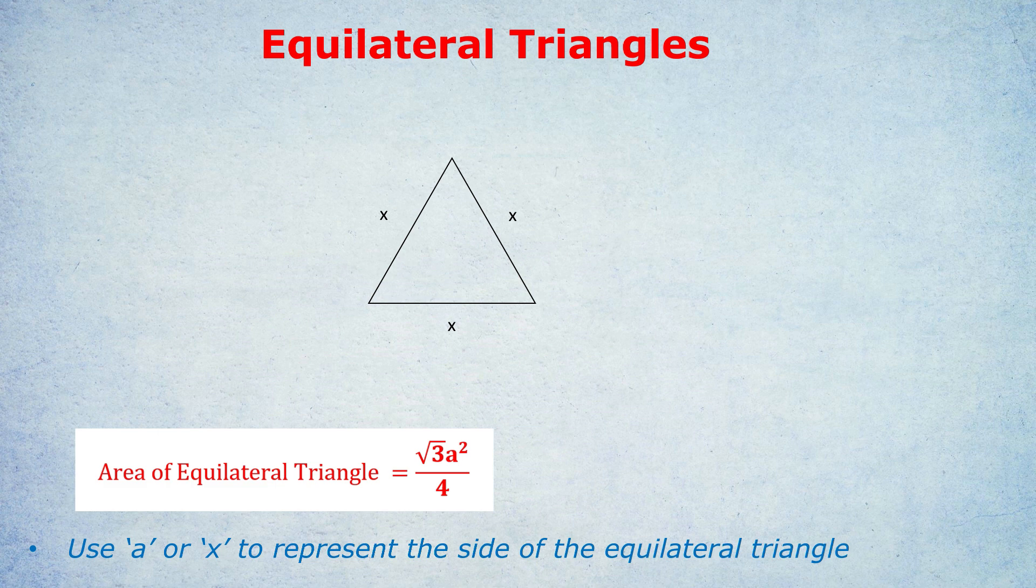It could be x, I've seen some formulas use s, some formulas use a. The a in this formula represents the side of the equilateral triangle. The formula is once again root three times a squared over four equals the area of the equilateral triangle.